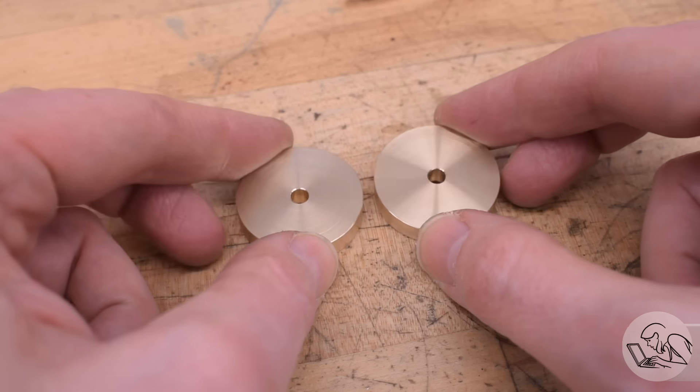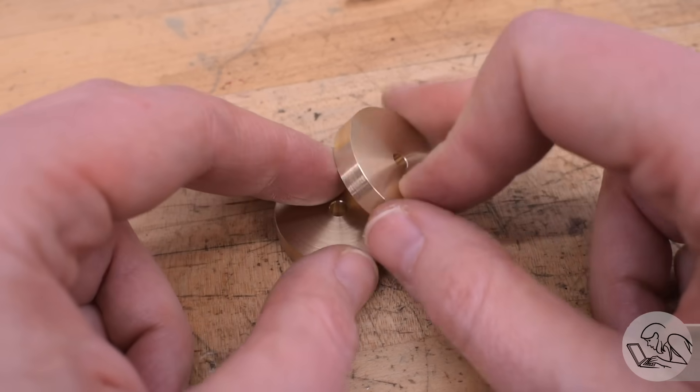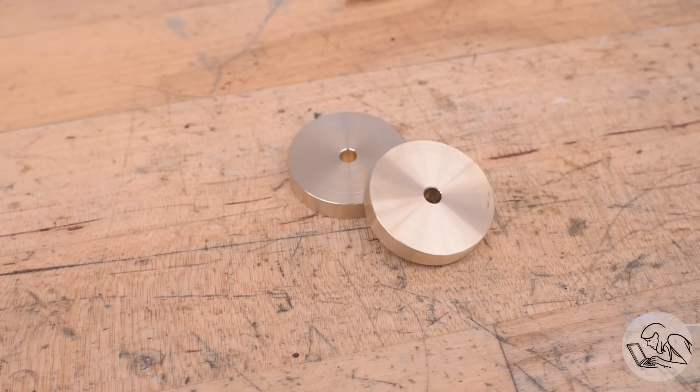Here are two discs that I've drilled a pilot hole in because many square hole methods start with a round hole. A drill is a very easy way to remove most of the material. Now we just need to square up the corners.